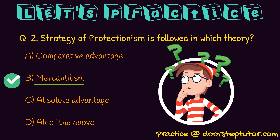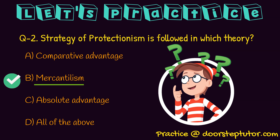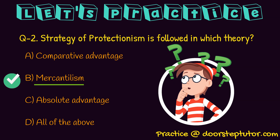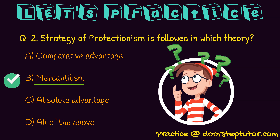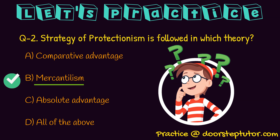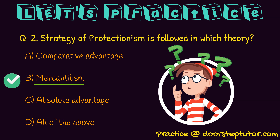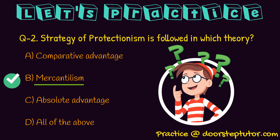Today we talked about the meaning of international trade and various theories: mercantilism, theory of absolute advantage, theory of comparative advantage, and lastly the Heckscher-Ohlin theory or modern theory. Thank you so much for your time.